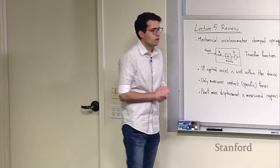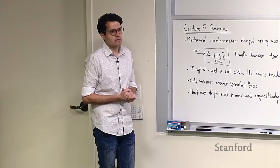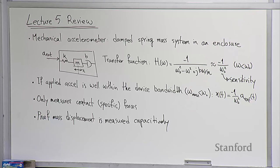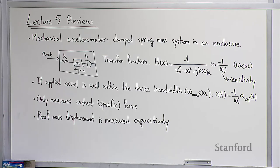Let's do a quick review of lecture five and remind ourselves where we left off. We started talking about IMUs or inertial sensors and broke it down into two main types: accelerometers and gyroscopes. So far we have only talked about accelerometers, specifically mechanical accelerometers. From a mechanical architecture point of view, these are just damped spring-mass systems in an enclosure, or a damped harmonic oscillator in an enclosure.